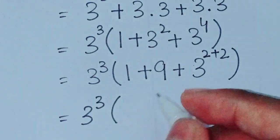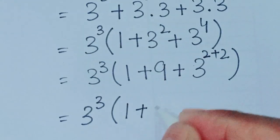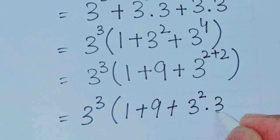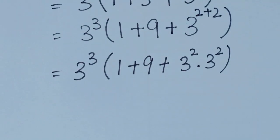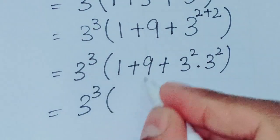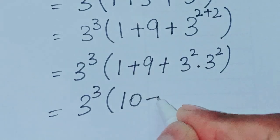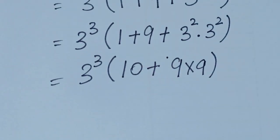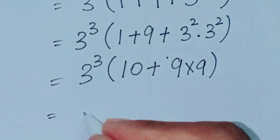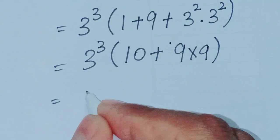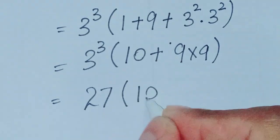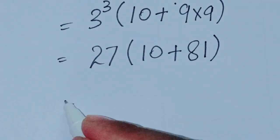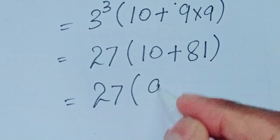So we have 3 power 3 into 1 plus 9 plus 3 square dot 3 square. That gives us 3 power 3 into 1 plus 9 is 10, plus 9 multiplied by 9 is 81. So 3 power 3 is 27, into 10 plus 81 is 91. So 27 multiplied by 91 equals 2457.